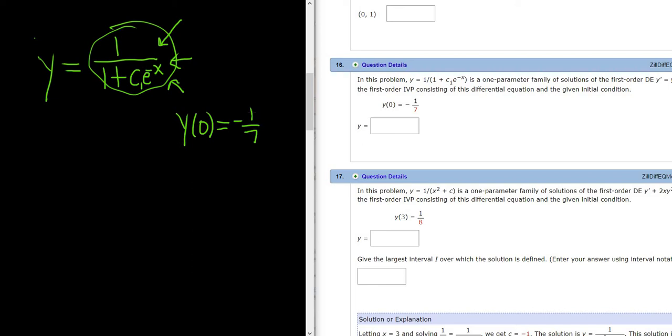To do this, all we have to do is replace x and y with their given values. So this is your y value: negative 1/7 equals 1 over (1 plus c1 e to the negative x). And x is actually equal to 0, so this is e to the 0. So we have negative 1/7 equals 1 over (1 plus c1).